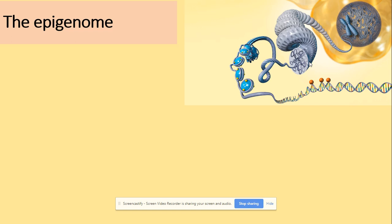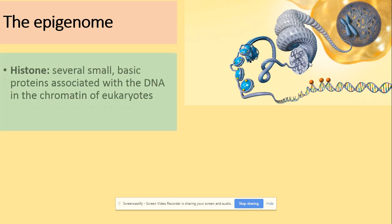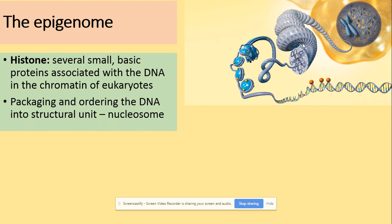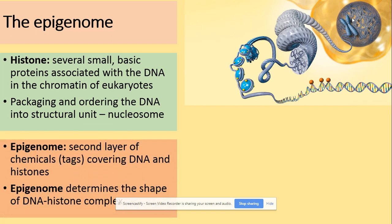Let's look at a few definitions. What is a histone? Histones are small, basic proteins which are associated with DNA in the chromatin of eukaryotic cells — you will not find them in prokaryotic cells. They pack and order the DNA structure into the nucleosome.